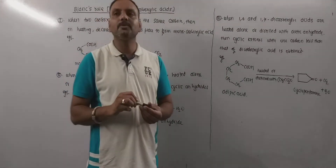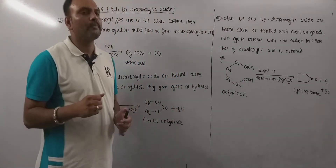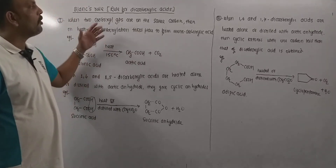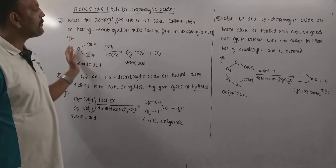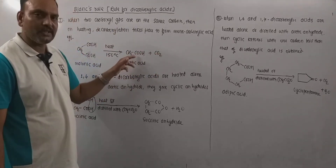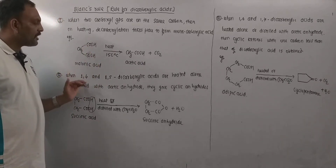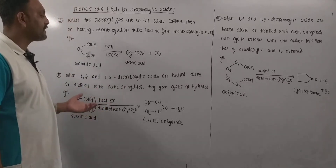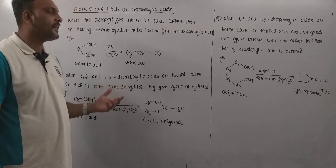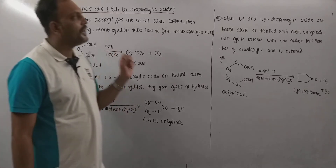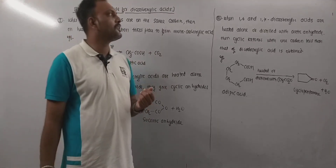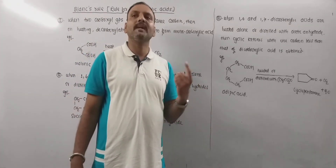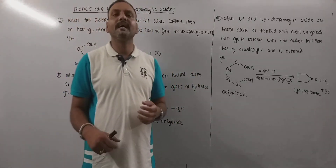So let me repeat the key points of Blank's Rule: when we heat a dicarboxylic acid with both carboxyl groups on the same carbon, it undergoes decarboxylation to give monocarboxylic acid. When we heat 1,4 or 1,5 dicarboxylic acids alone or distilled with acetic anhydride, they give cyclic anhydrides. And when we heat 1,6 or 1,7 dicarboxylic acids alone or distilled with acetic anhydride, cyclic ketones with one carbon atom less than the dicarboxylic acid are obtained.